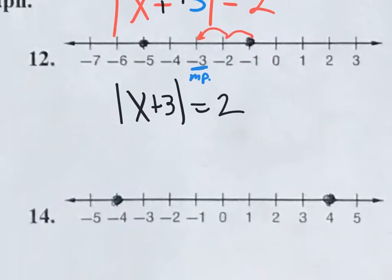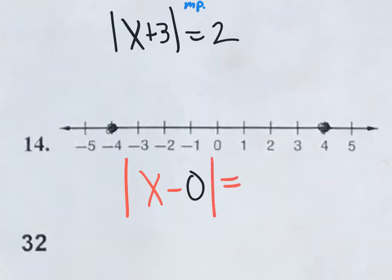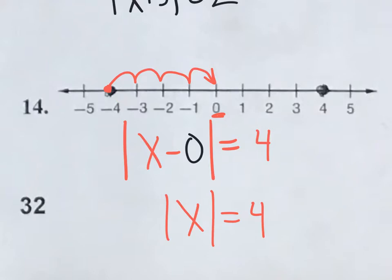Let's do number 14. You have to identify the midpoint. Going one in from each point, the midpoint is zero. So the setup is: the absolute value of x minus zero equals the distance from one of these points to the midpoint zero, which is four. The better answer is to just write the absolute value of x equals four, since x minus zero is just x. That's the equation giving both answers, negative four and positive four.